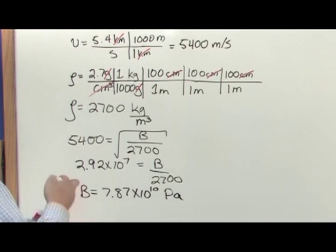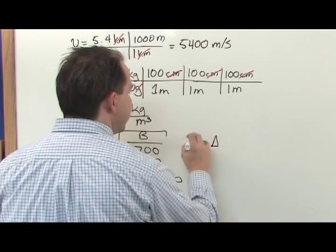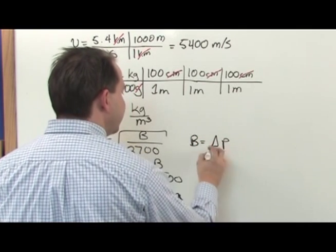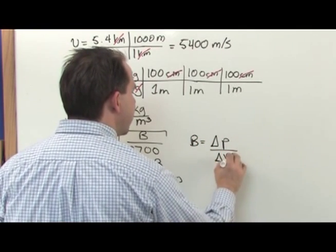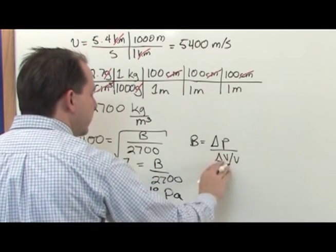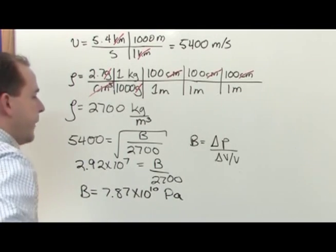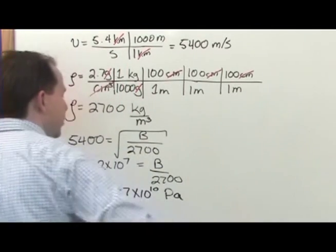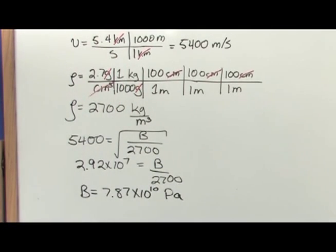When you look at the units, the bulk modulus was the pressure you apply divided by the fractional change of volume. Well, here you've got volume divided by volume, so you have no units on the bottom, and on the top you have the pressure, which is Pascals. So the bulk modulus unit is Pascals.